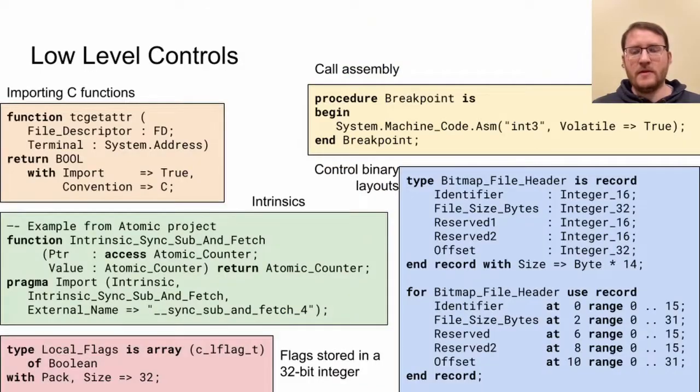This is a sampling of low-level controls. You can import C functions, and then call them as if they were normal Ada functions. Compiler intrinsics work the same way, as in this example from the Atomic project. Inline assembly is allowed. I used this assembly to cause the debugger to break in the appropriate failing assertion when a test would fail in my test suite. When I did the popular ray tracing in one week in Ada, I adjusted binary layout to make a struct appropriate to write a BMP file header.